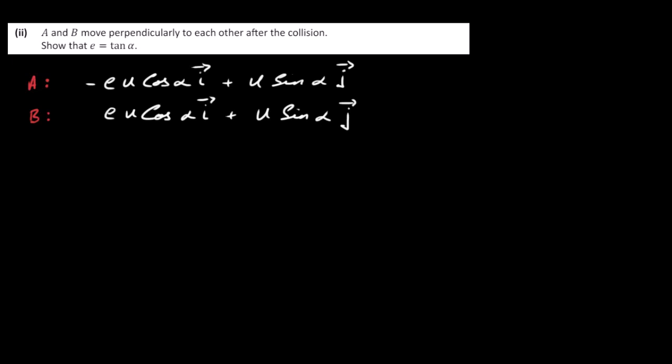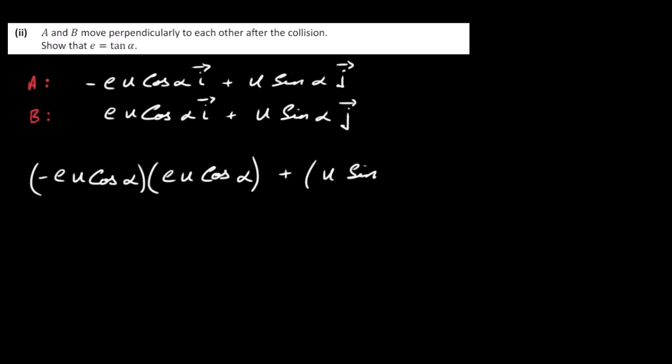Part B2: A and B move perpendicularly after the collision; show that E = tan(α). Since the vectors are perpendicular, their dot product equals zero. Taking the dot product: (-EU cos α)(EU cos α) + (U sin α)(U sin α) = 0.